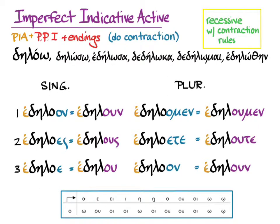The accents go on the uncontracted forms, so the final pronunciation is: edeloun, edelous, edelou, edeloumen, edeloute, edeloun. Notice with the imperfect that many of the accents fall on a vowel that isn't contracted in the final form, and therefore it stays away from the contraction in the contracted form.